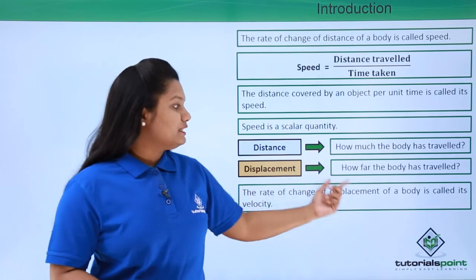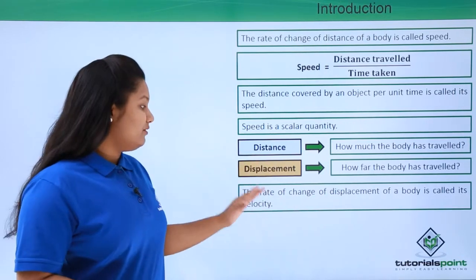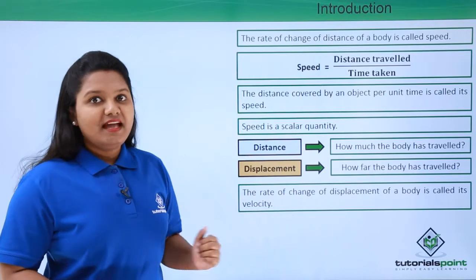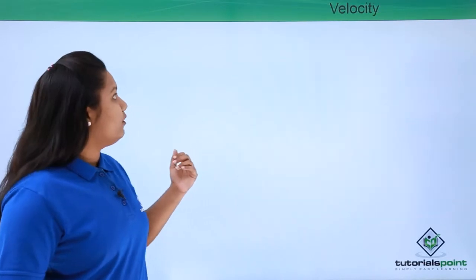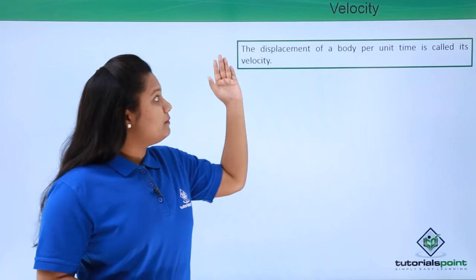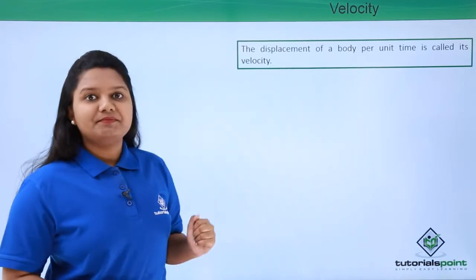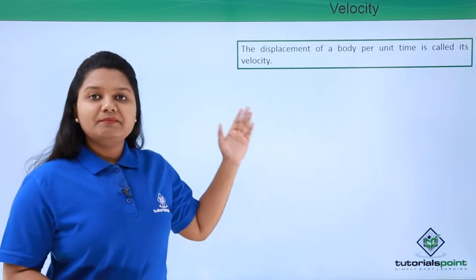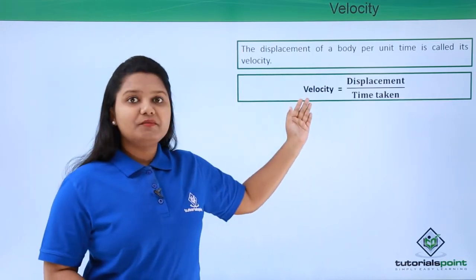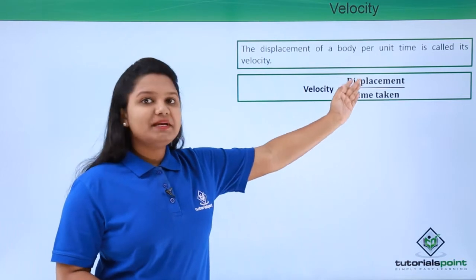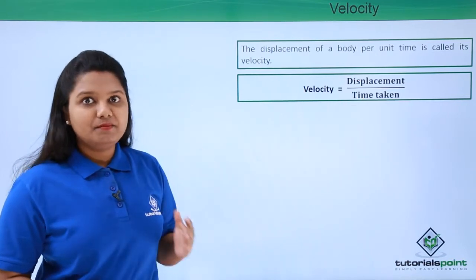So the rate of change of displacement of a body is what we call the velocity of a body. We can also say that the displacement of a body per unit time is called velocity, which mathematically is: velocity equals displacement divided by the time taken.